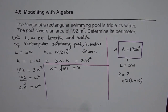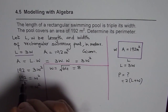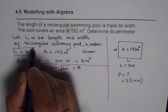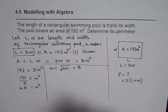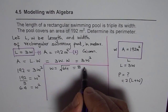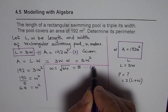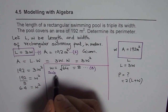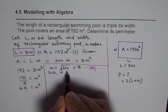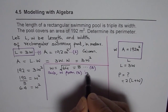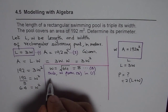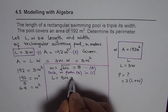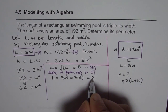Now that we know the width, we can use the relations we wrote earlier. Let's call L = 3W as equation 1, area = 192 as equation 2, and W = 8 as equation 3. Substituting W from equation 3 into equation 1, we get length equals 3 times 8, which is 24.